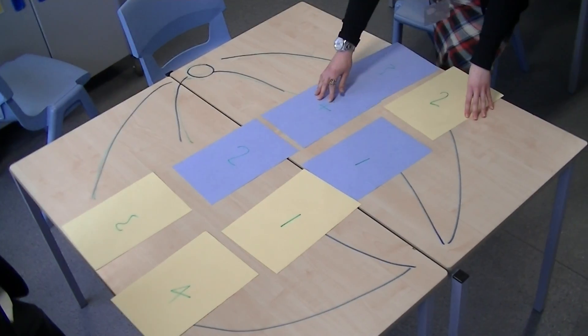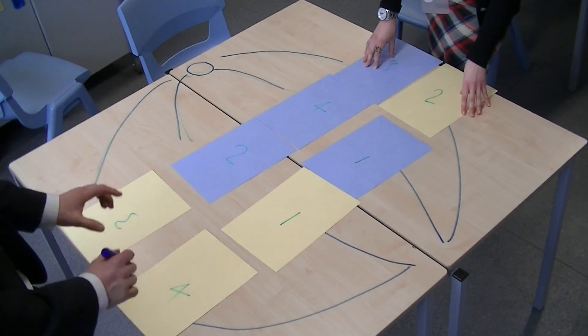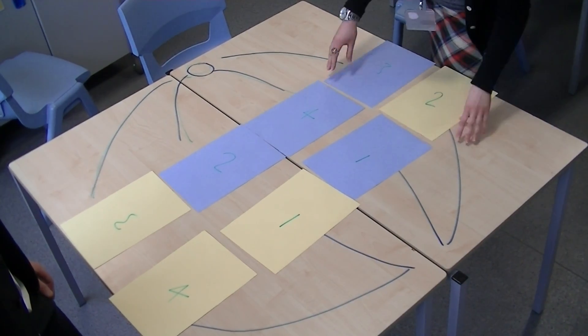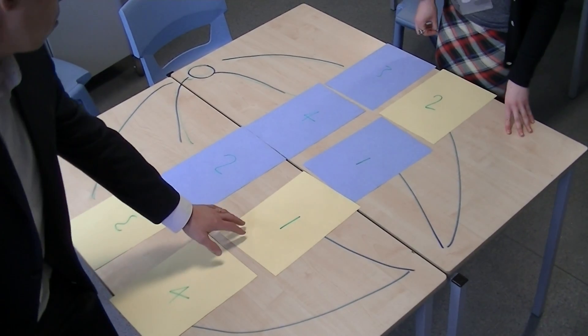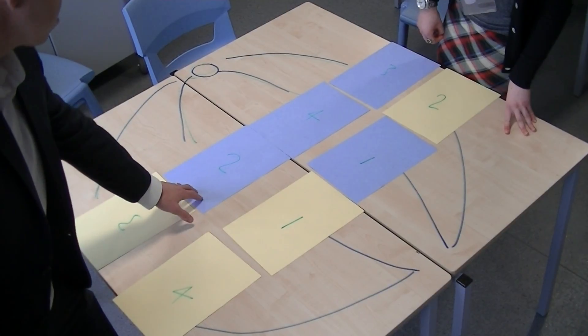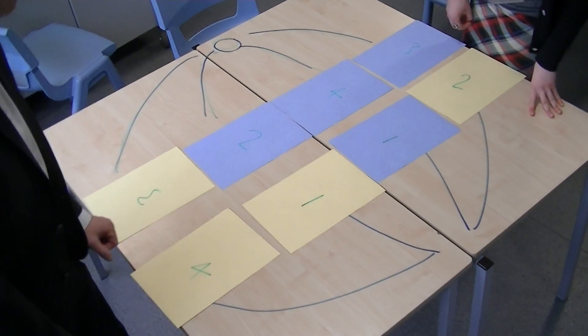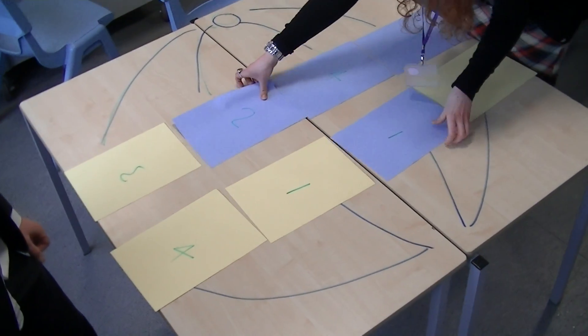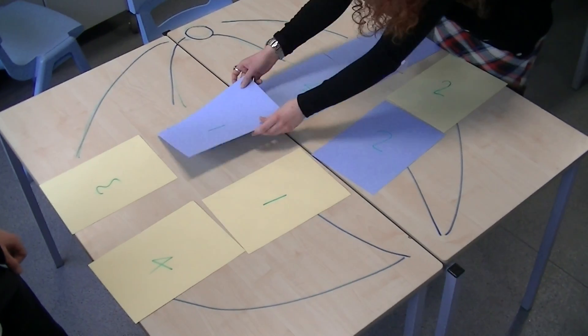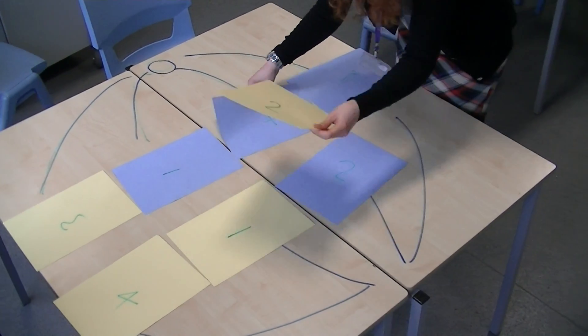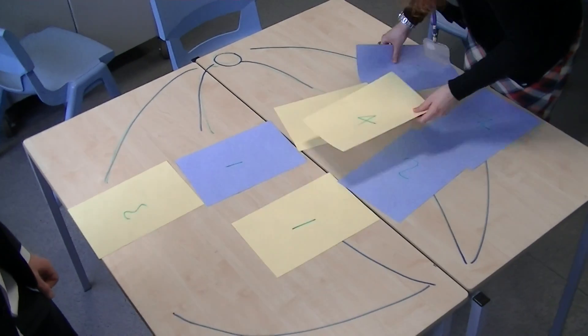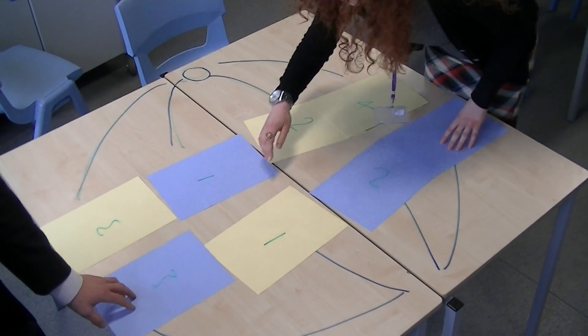So my first question for us is, have you arranged homologous chromosomes? Chromosome number one and chromosome number two. Change it so they're homologous chromosomes. Great, brilliant.